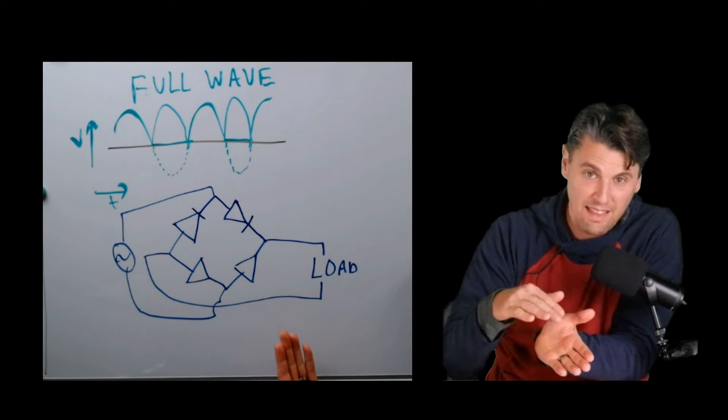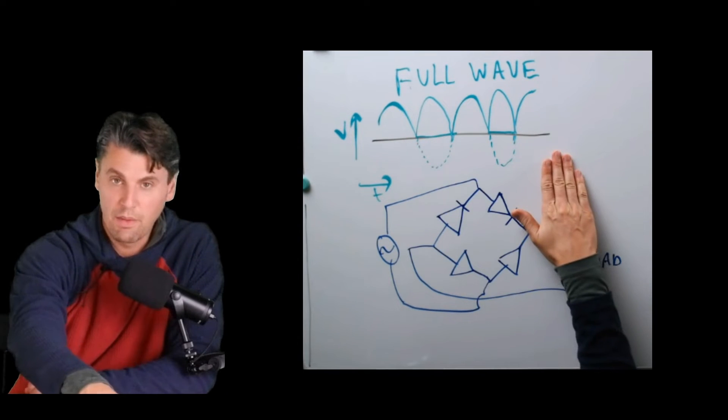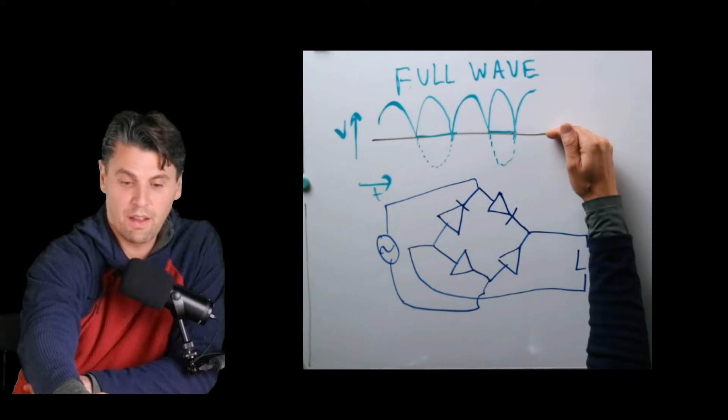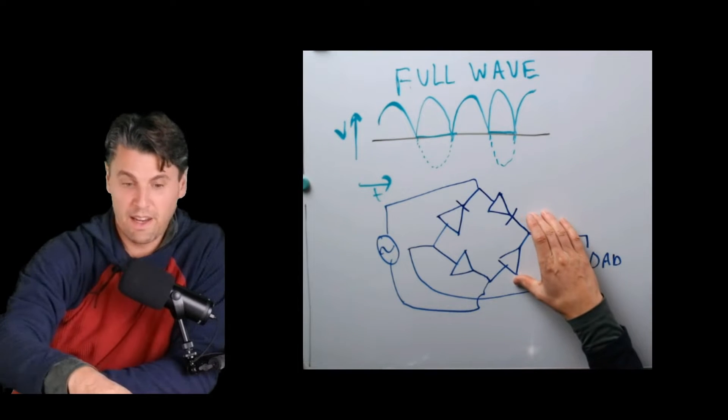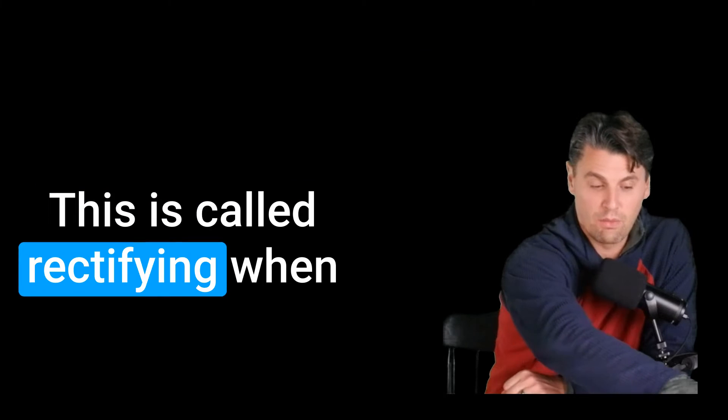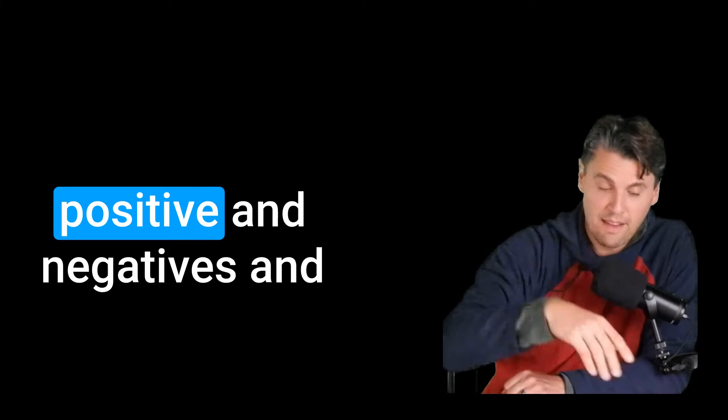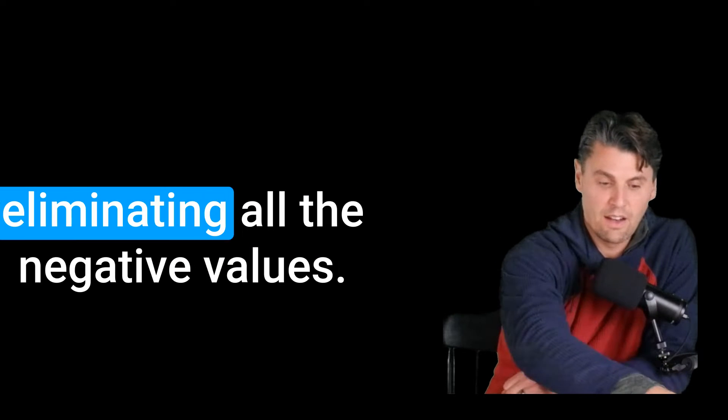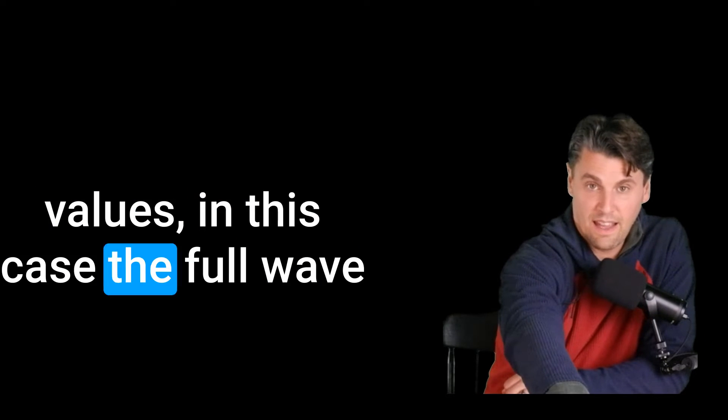Before we were actually cropping everything that was below zero. Now you can think about it's like taking the absolute value of our signal, again, doing so in an analog manner with this rectification circuit. This is called rectifying when we're taking our signal that had positive and negatives and eliminating all the negative values such that we're getting only positive values. In this case, the full wave rectification.